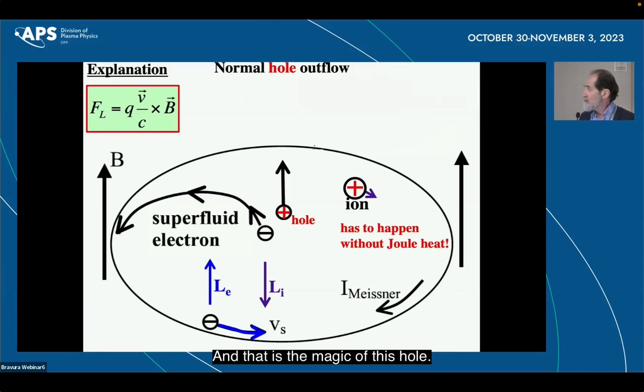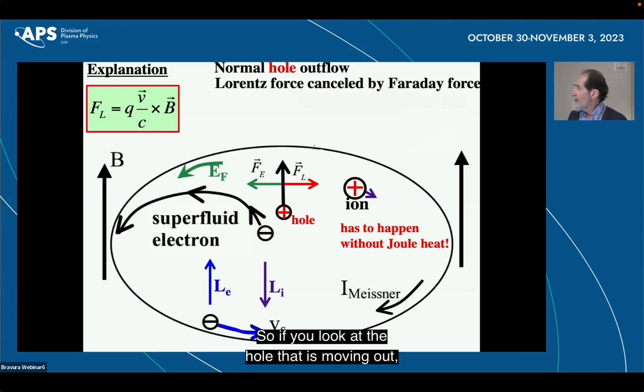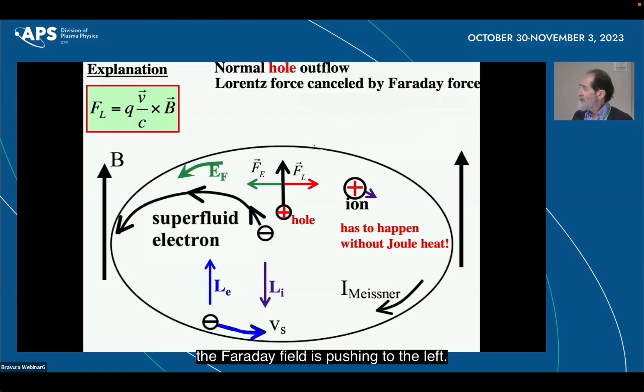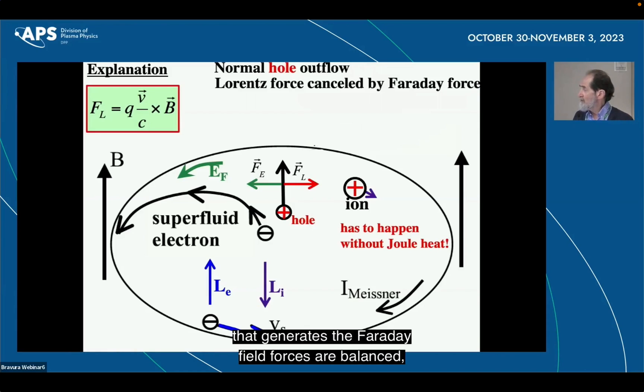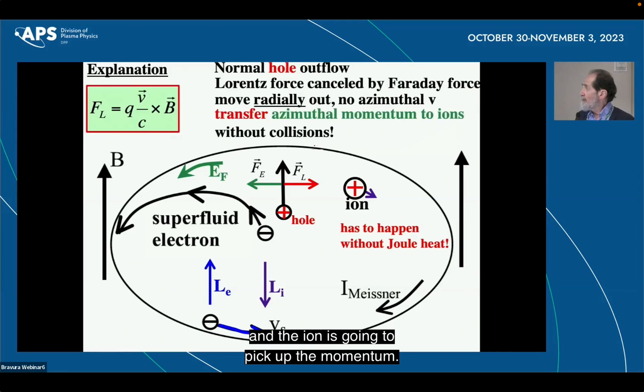And that's where the holes come in. And that is the magic of this hole. So if you look at the hole that is moving out, if you look at the forces acting on it, there's a Lorentz force pushing to the right. The electric, the Faraday field is pushing to the left. If the hole is moving at the same speed as the boundary is moving that generates the Faraday field, forces are balanced. It moves radially out. And the ion is going to pick up the momentum. And this picture doesn't explain it at all.